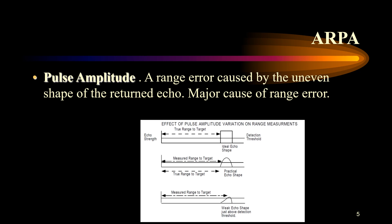Pulse amplitude provides a range error caused by the uneven shape of the returned echo, and this is probably the major cause of range error. Looking at the diagram, it shows the ideal shape an echo should have to get a good return from the target — but this is seldom the case in practice.